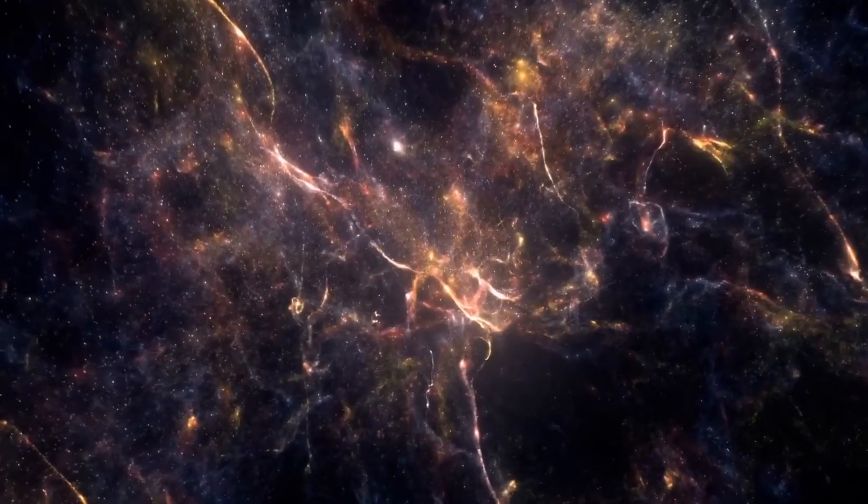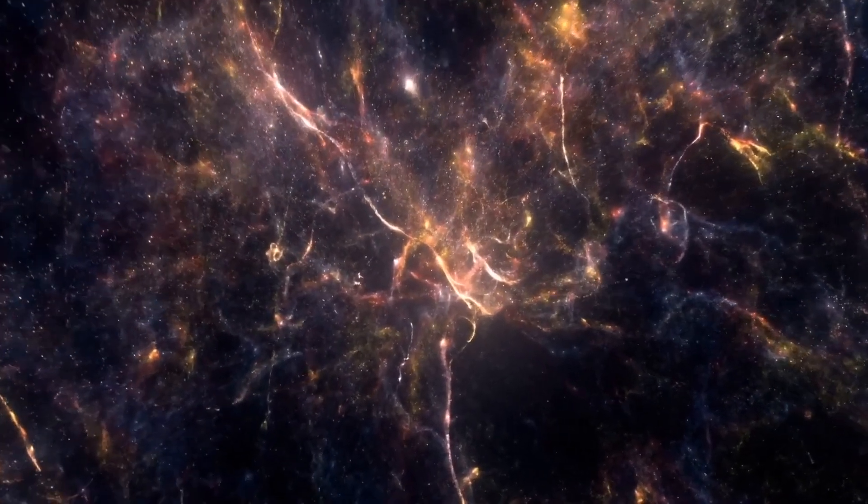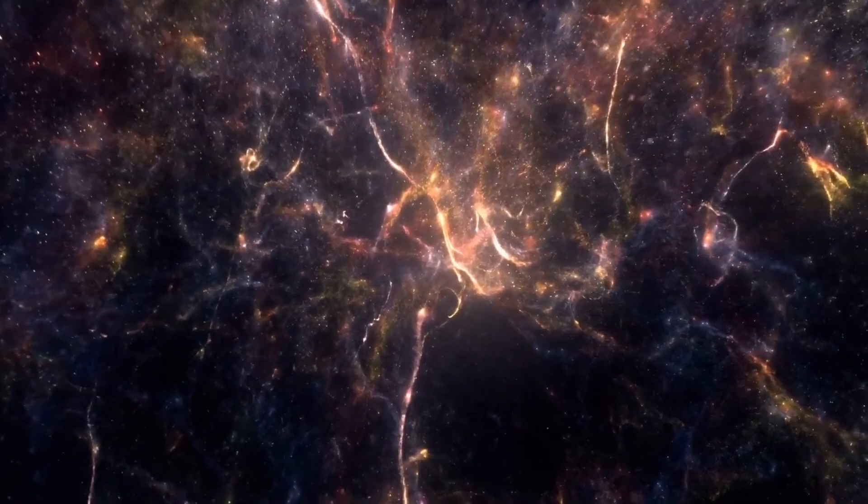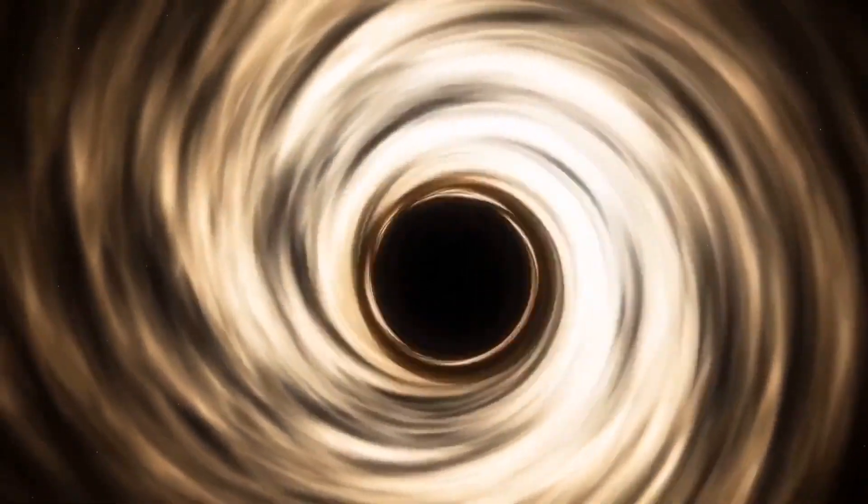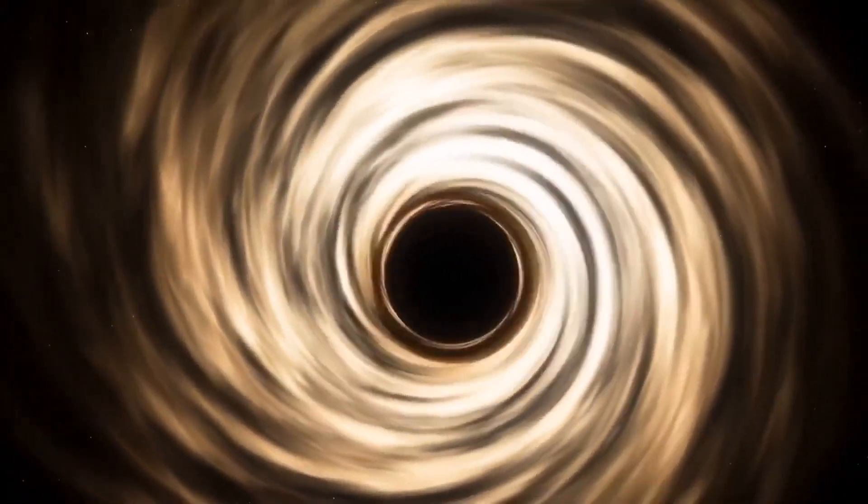Soon, researchers announced the discovery of the first ancient galaxies and a massive black hole with a mass 10 million times greater than our sun. But how can such a massive object exist in an era when the universe was still in its early days? A black hole of this size so soon after the Big Bang disrupts our previous understanding of galaxy formation.